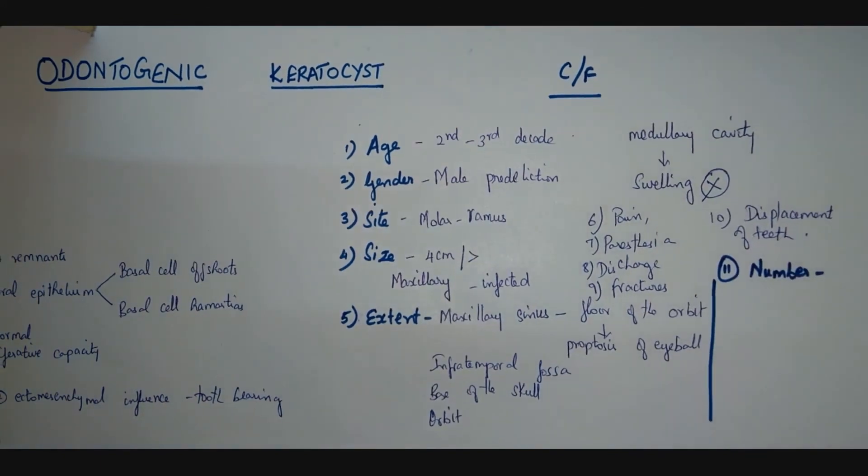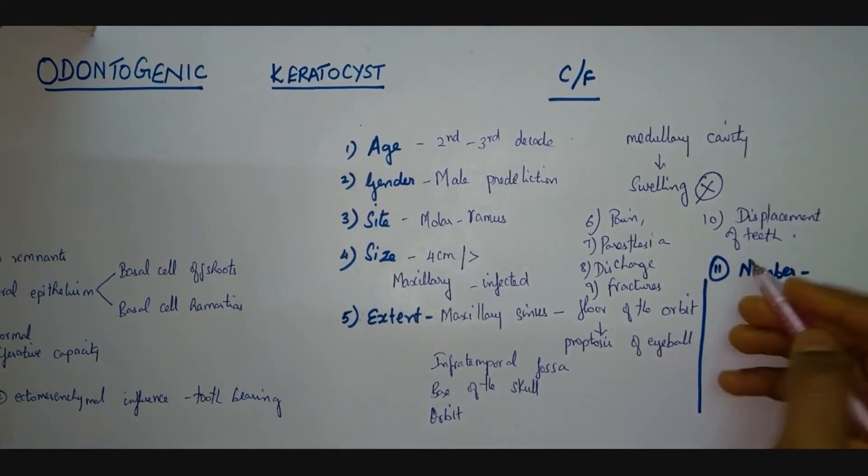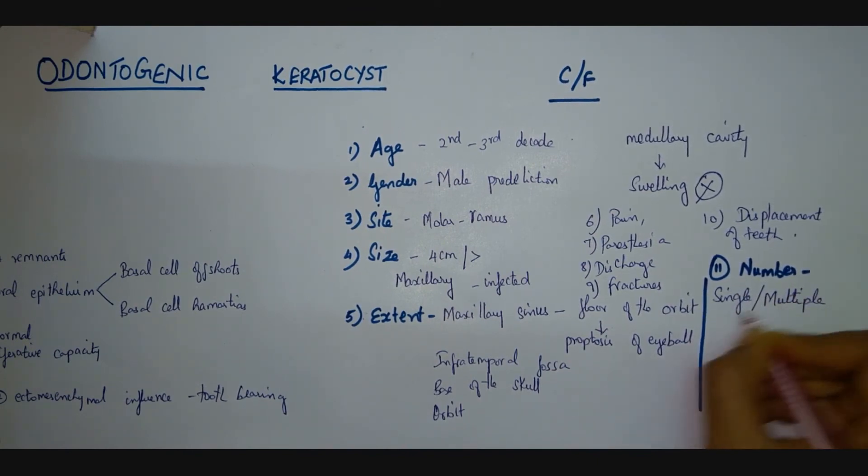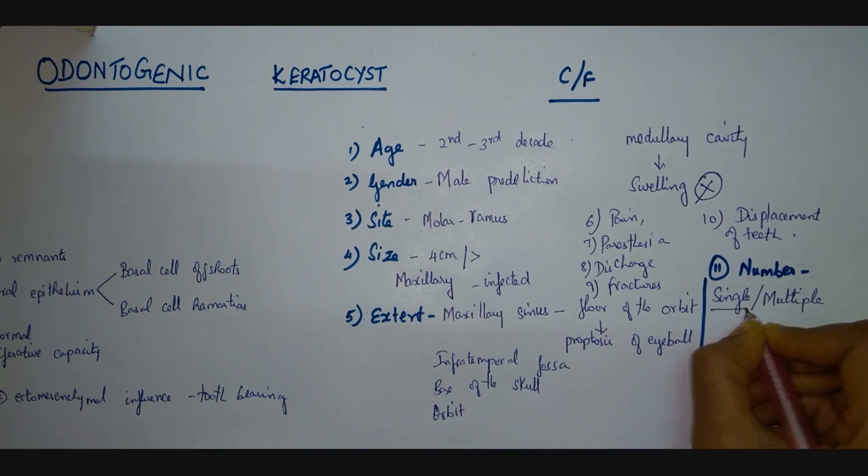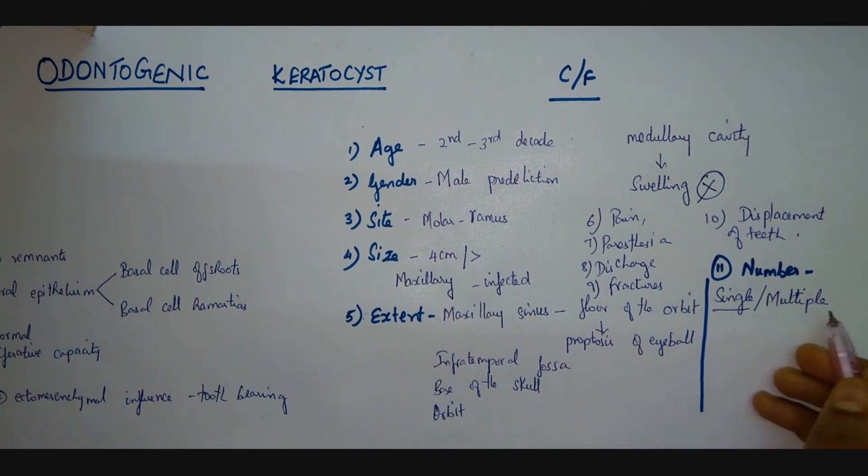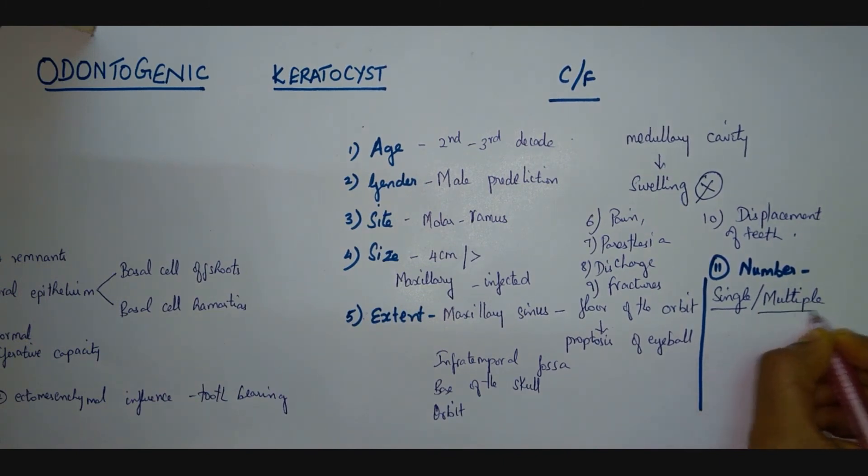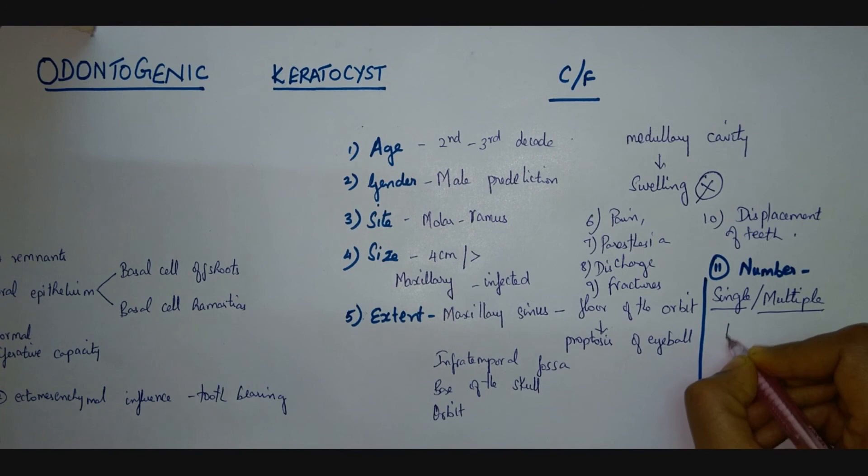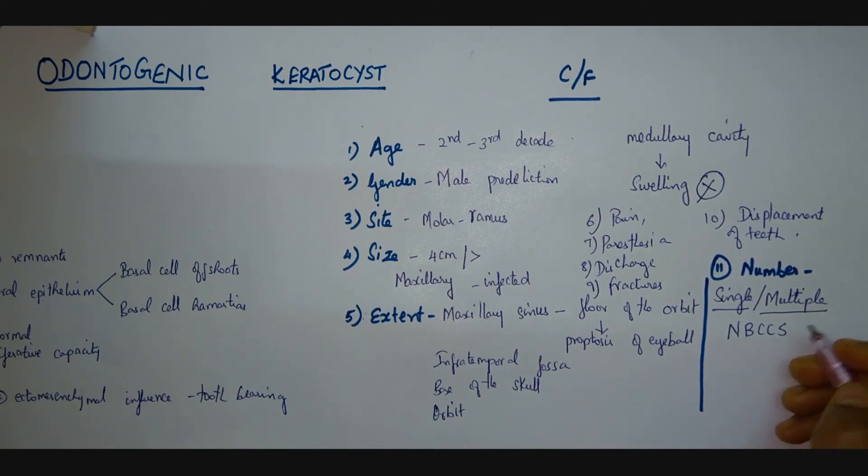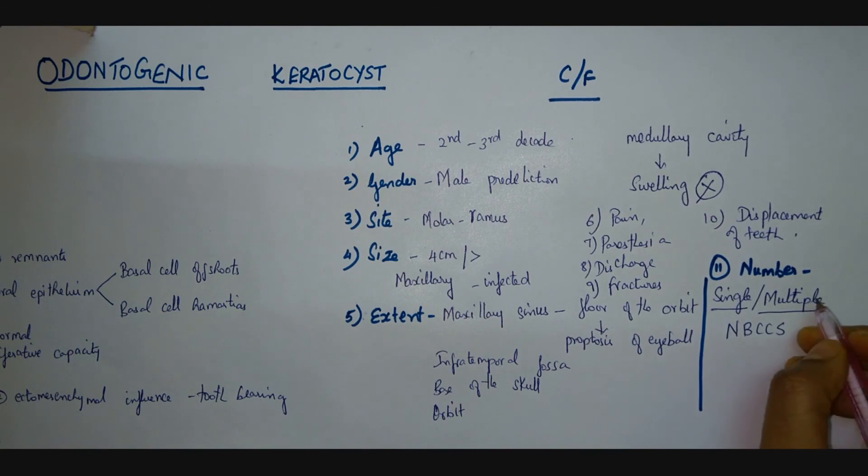Thinking about the number of the cyst, the cyst can either present as a single cyst or it can also be as multiple cysts. Whenever a single cyst has been diagnosed, then we have to carefully look into the radiograph for presence of any other additional cysts. Similarly, multiple cysts are most common or mostly seen in nevoid basal cell carcinoma syndromes. Therefore, any multiple odontogenic keratocyst patient has to be carefully investigated for the presence of other features of this nevoid basal cell carcinoma syndrome.